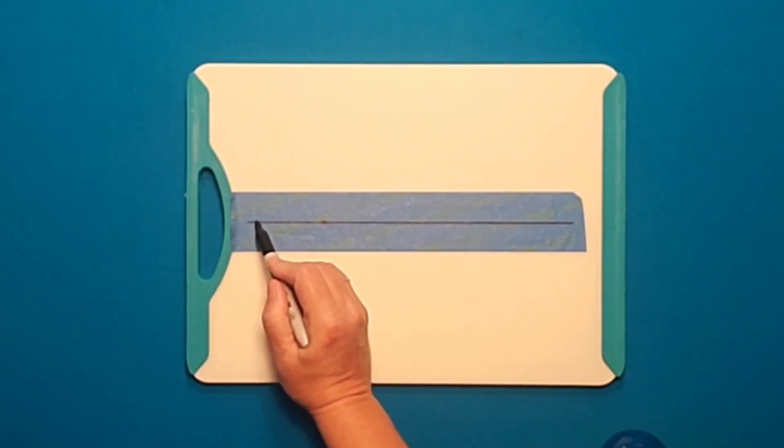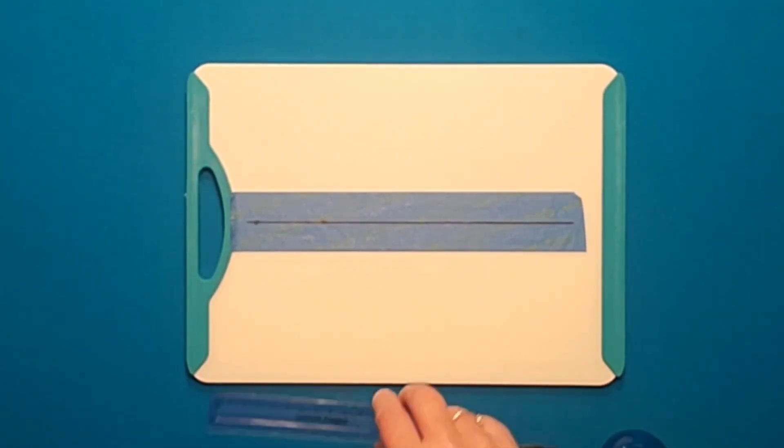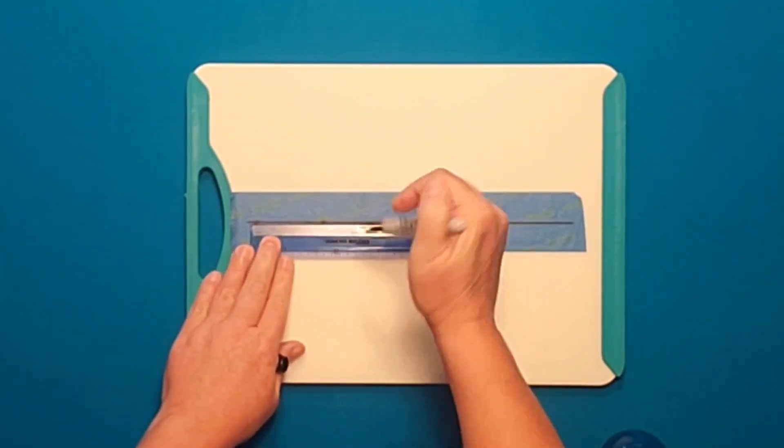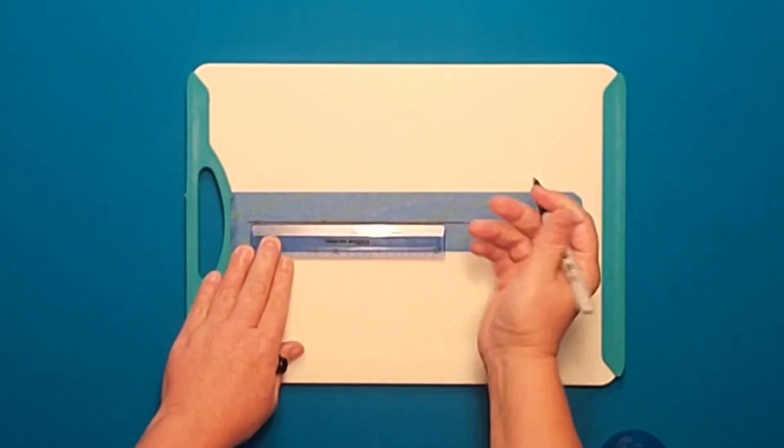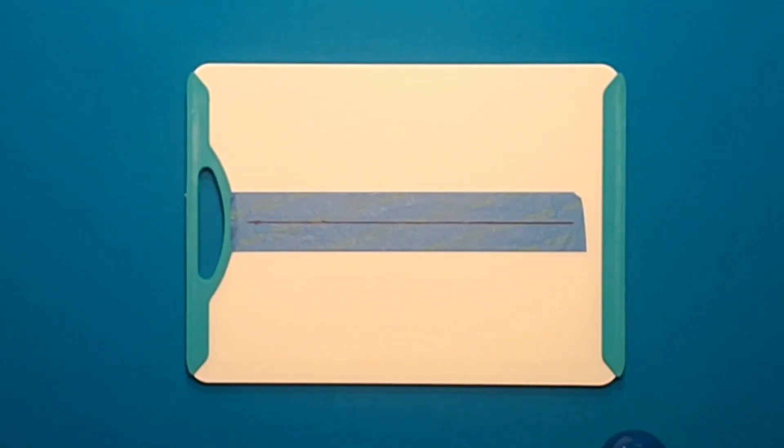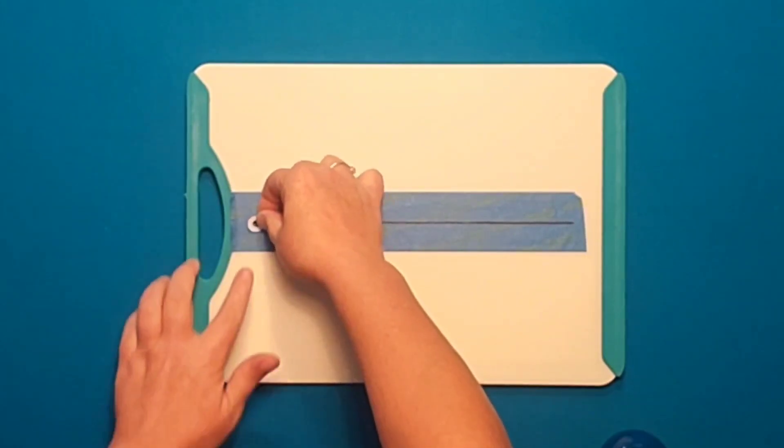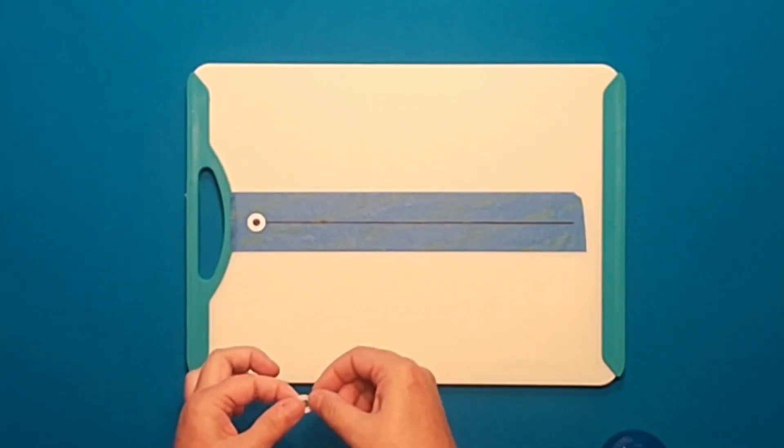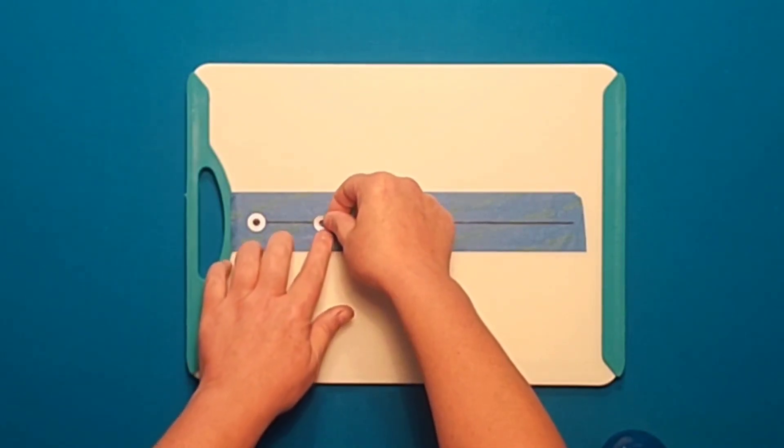Then place a dot on the line toward one end of the tape. Using your ruler, measure five and a half centimeters from that dot and mark that point on the line. Now you will need two paper reinforcement stickers. You will place them so that the dot on the line is in the very center of each sticker, just like you can see in the video.